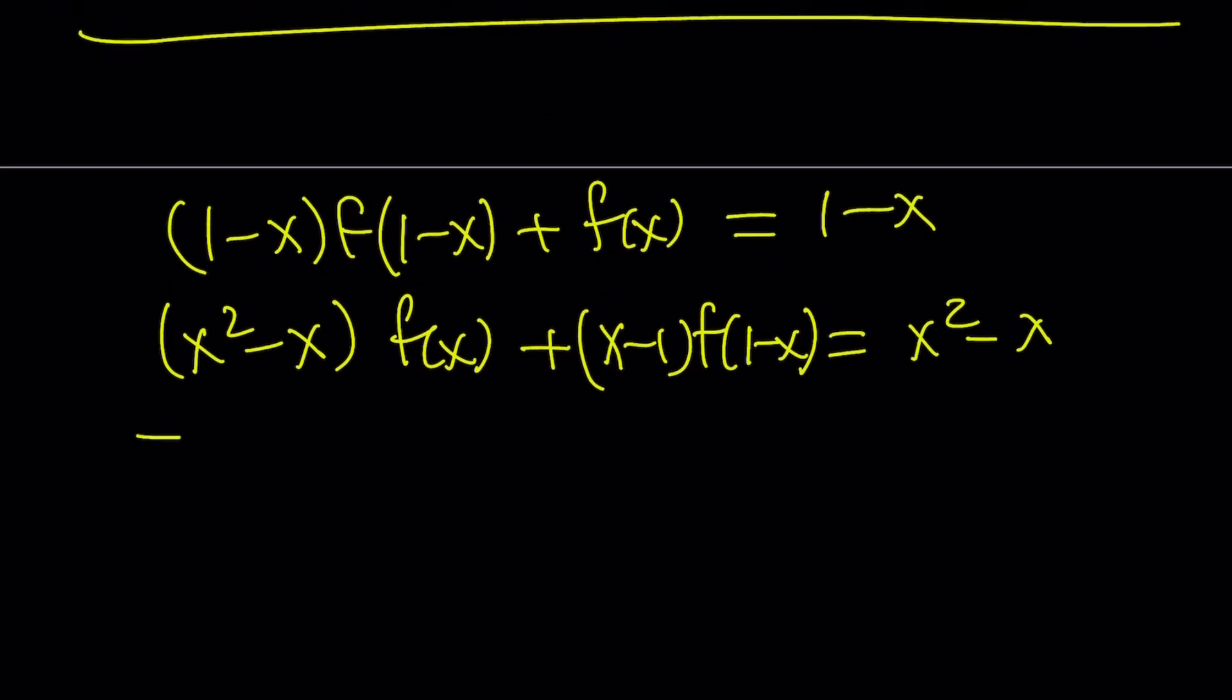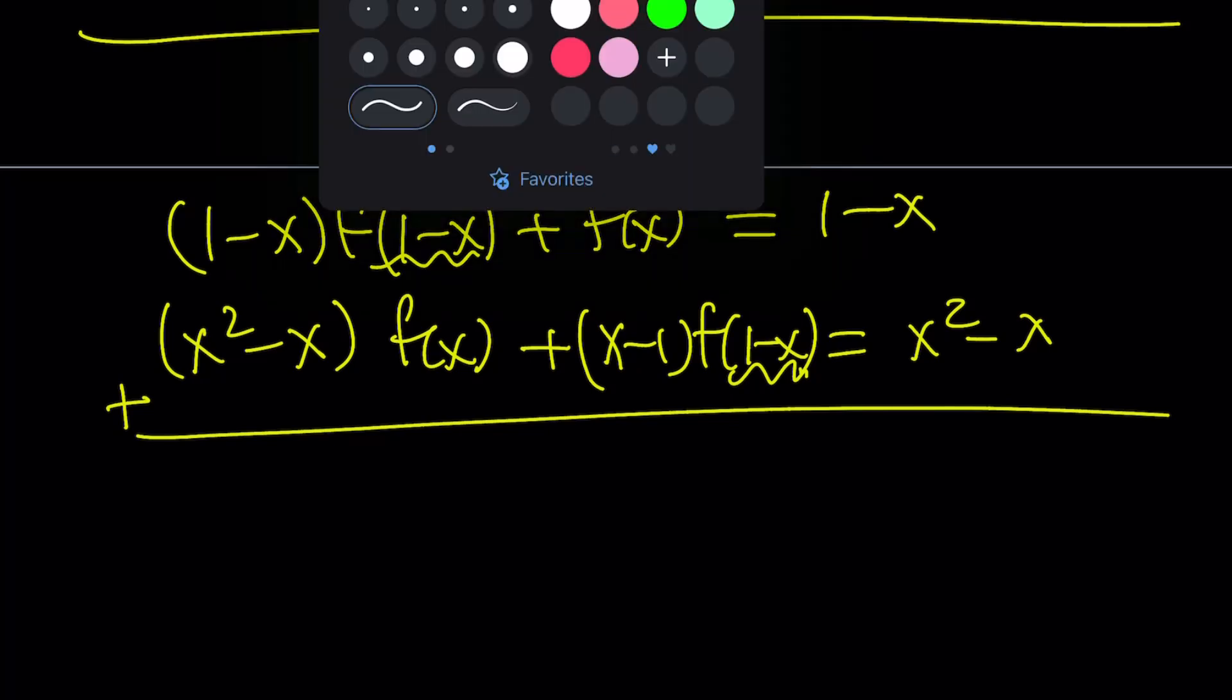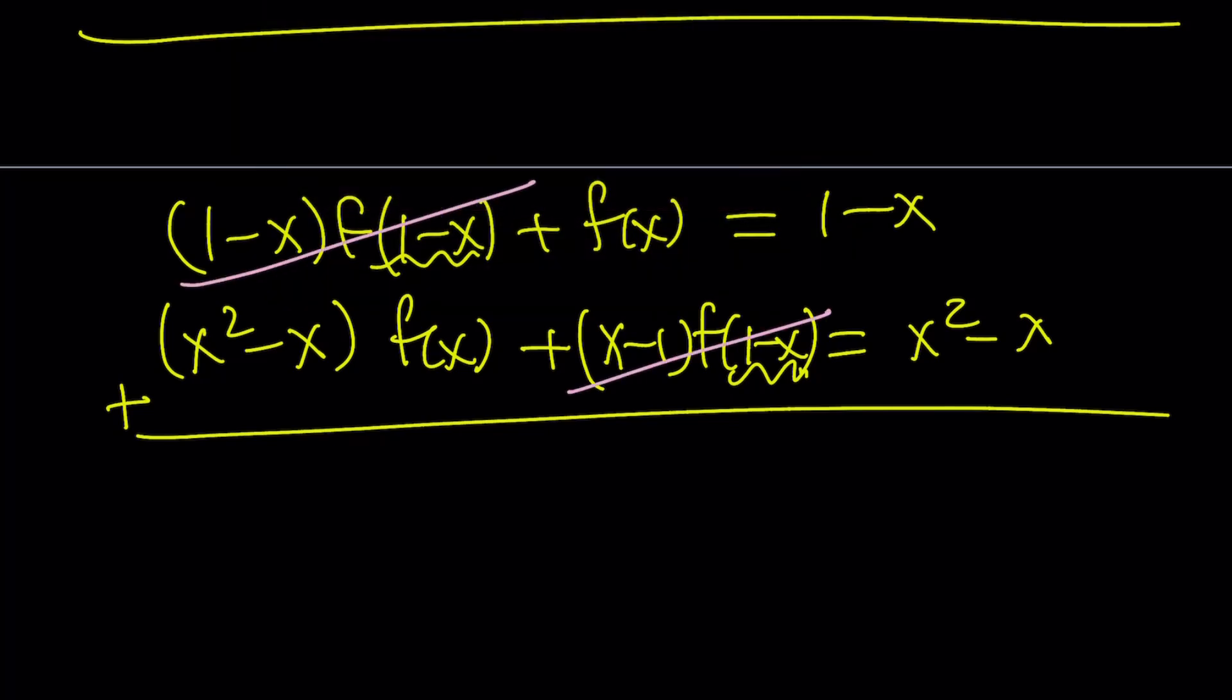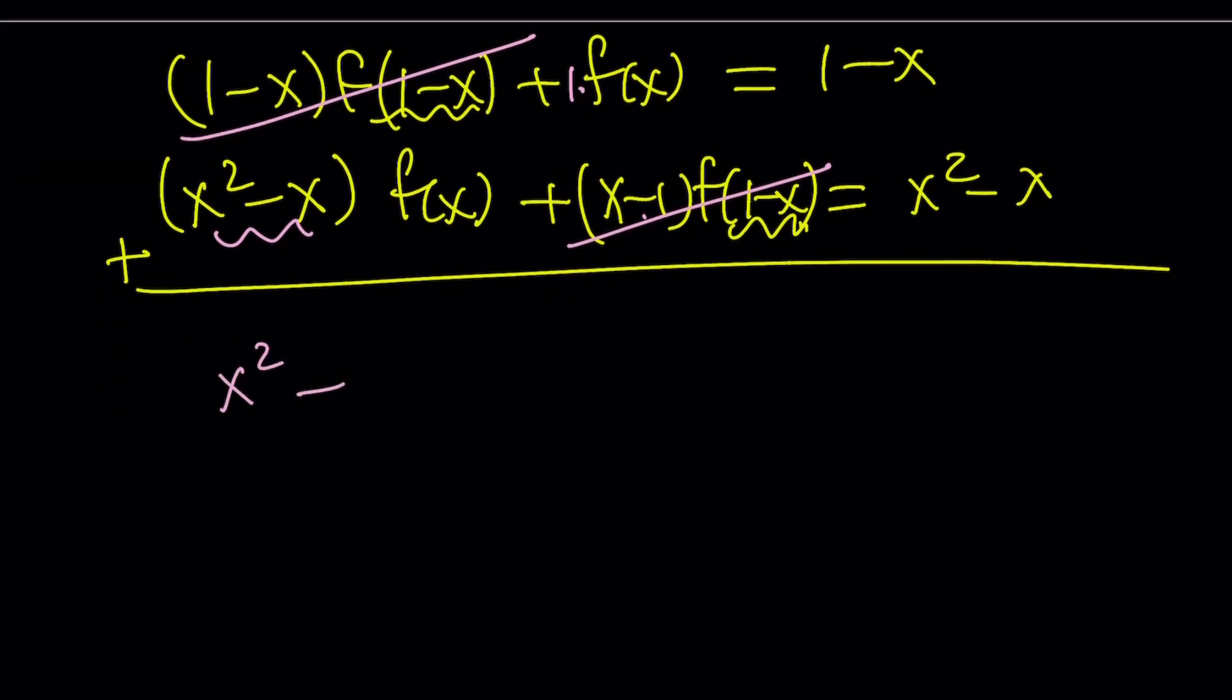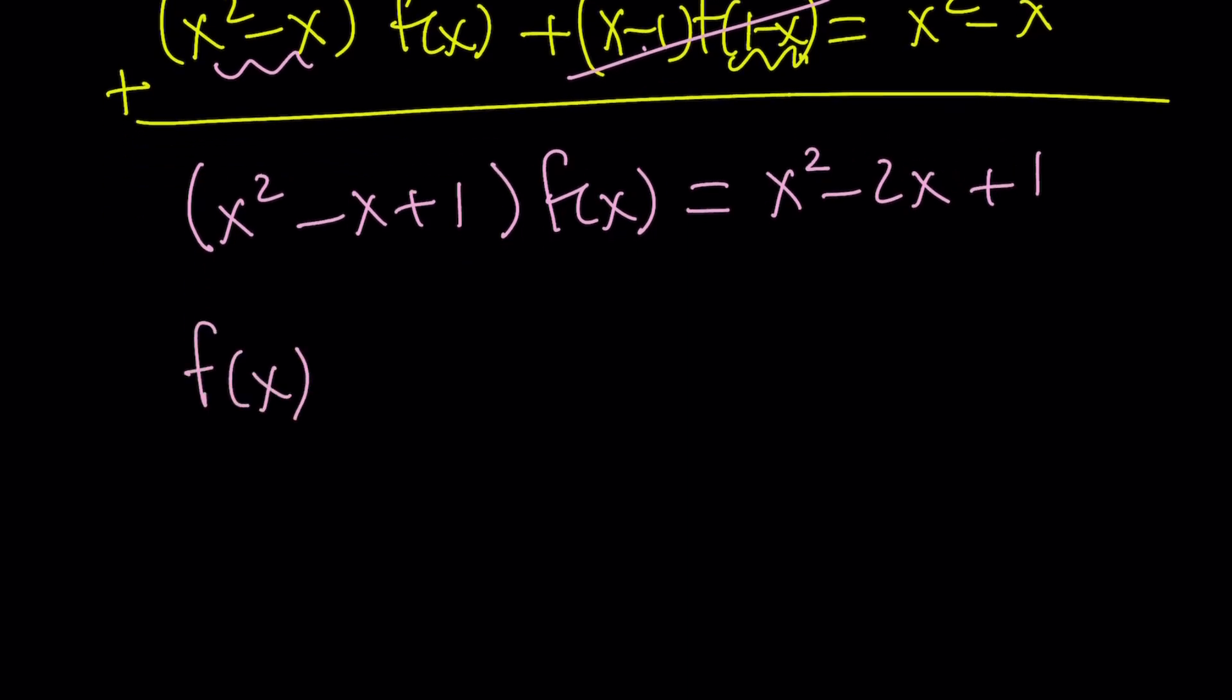So now we can go ahead and add these up. Since the coefficients of f of 1 minus x are opposites, when we add them, the sum will be 0. Because 1 minus x plus x minus 1 is 0. They cancel out. I have this plus 1 times f of x. So that's going to be adding like terms. x squared minus x plus 1 multiply by f of x. Equals. These two add up to x squared minus x plus x minus 2x plus 1. That's kind of special. It's x minus 1 squared. But nobody cares. From here, notice that x squared minus x plus 1 can never be 0, so we don't have to worry about dividing by 0 here, which is cool. Divide both sides by that and you're going to get an expression for f of x.